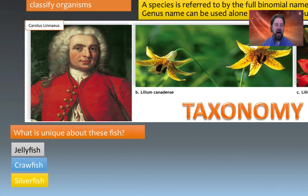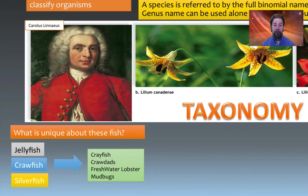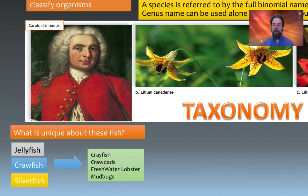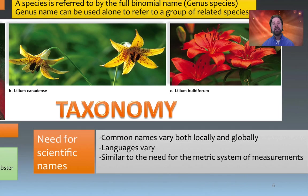Zeroing in on the crawfish — a popular American arthropod — if you go region to region in the United States you find different names: crayfish, crawdad, freshwater lobster, or mud bug. One person's crayfish is another person's crawdad. Biology needs a more standard system of naming that allows us to zero in on exactly the species we're talking about.